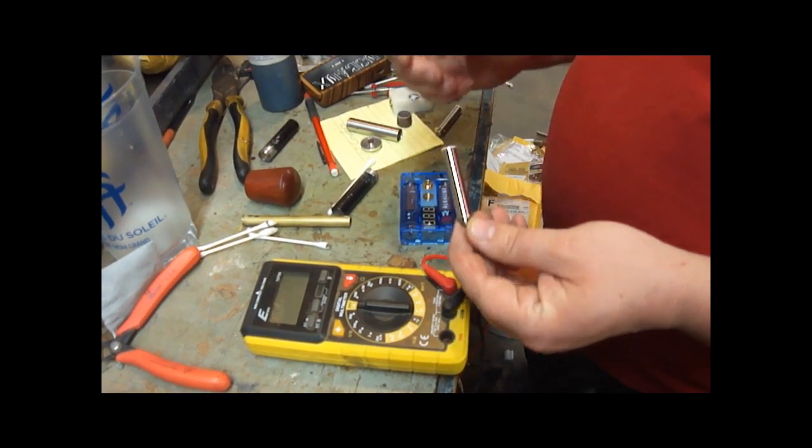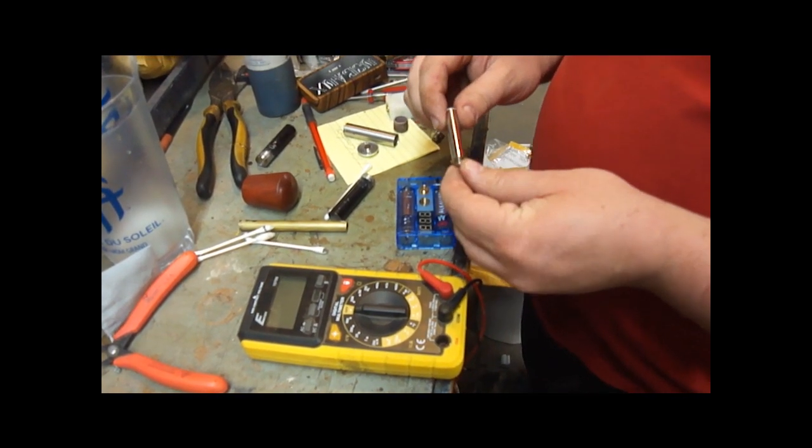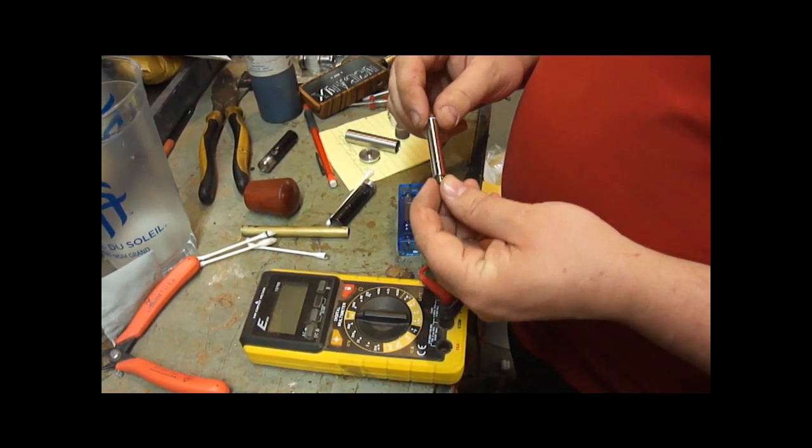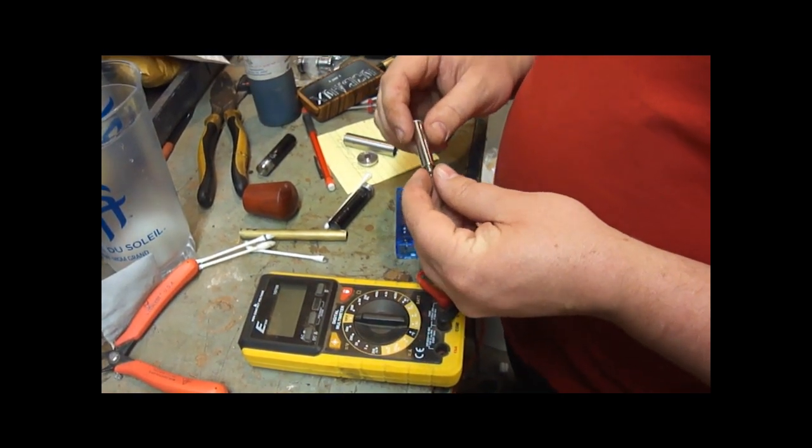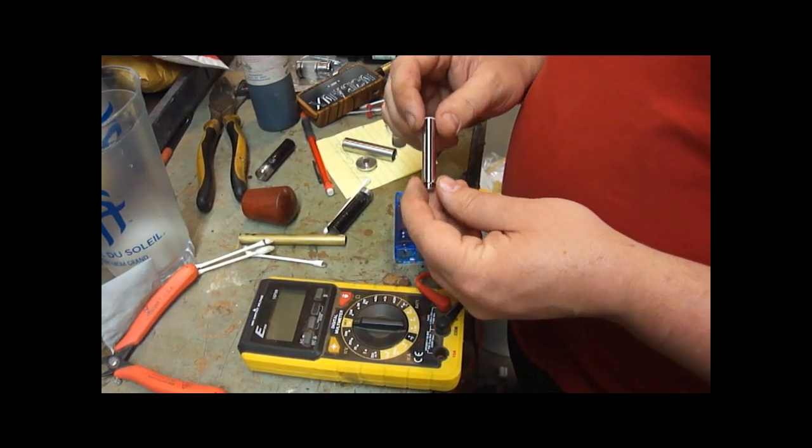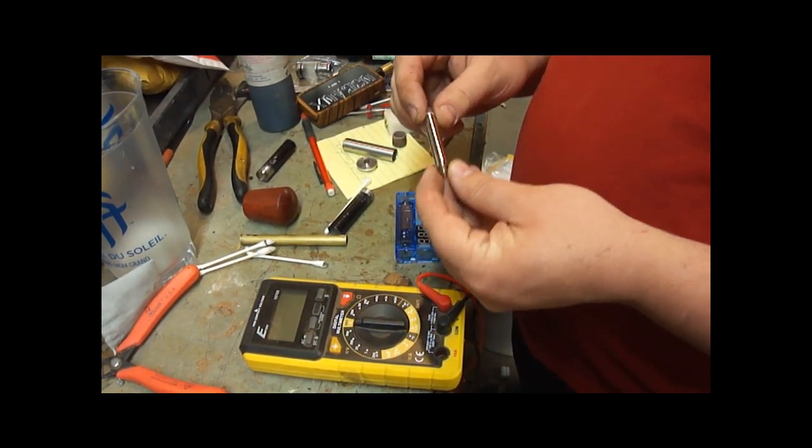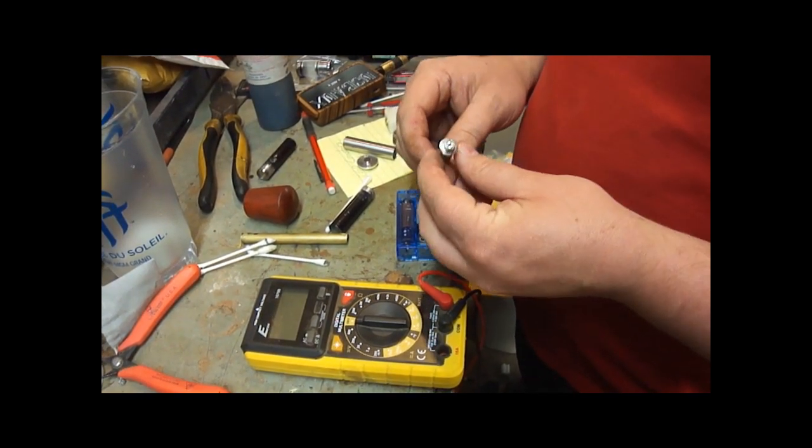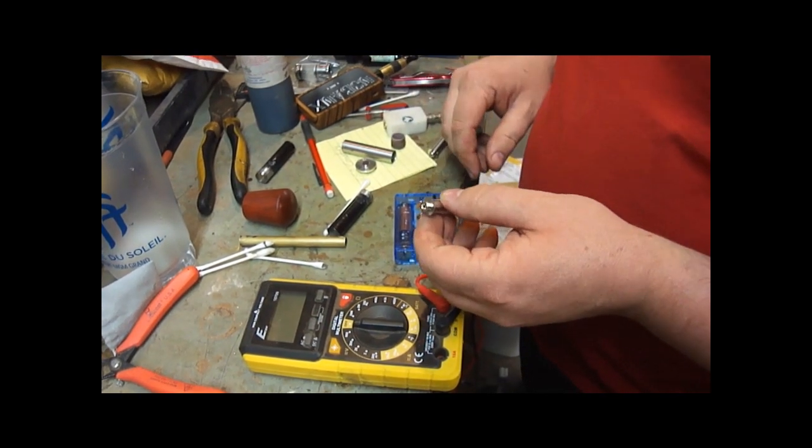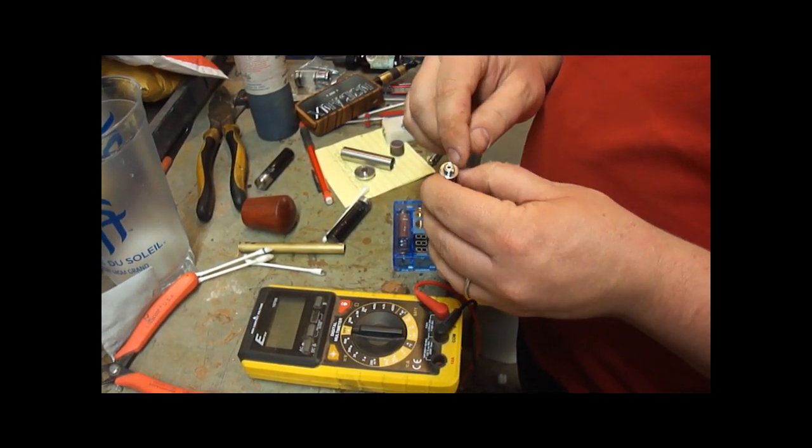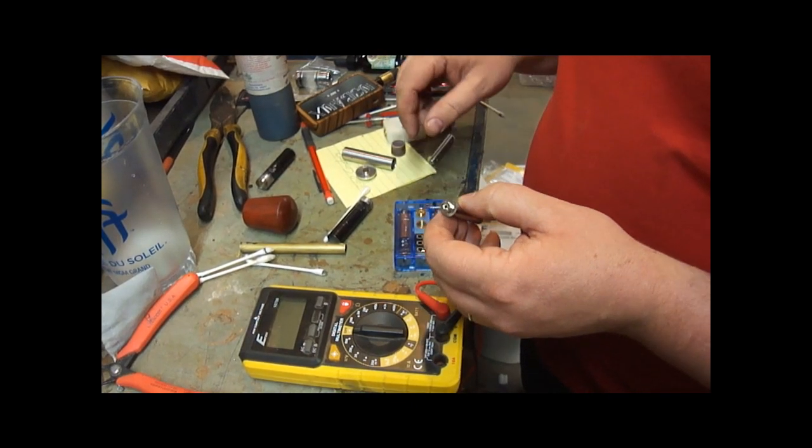All right, so here we have a standard tank cartomizer. Now, these are probably the biggest enemy when it comes to shorts on our pipes. They're very cheaply made. These things cost less than a dollar a piece, so the insulation between the center pin and the outer part of the cartomizer is not very good.